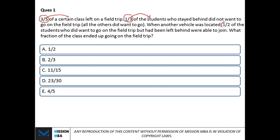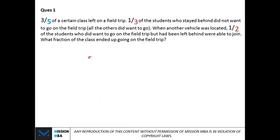The idea is very simple: you just have to assume the total number of students such that every fraction — three-fifths, one-third, one-half — becomes an easy number. Focus on the denominators: five, three, and two. Since all these fractions are related to the total number of students, assume the total as five times three times two — the product of the denominators — which gives thirty.